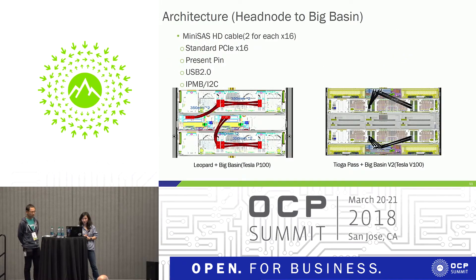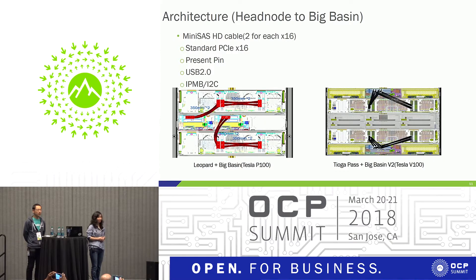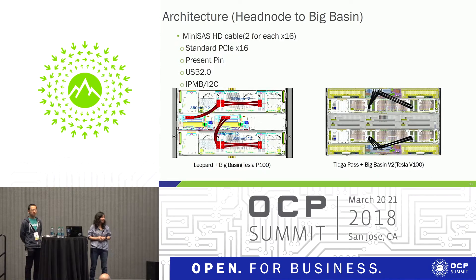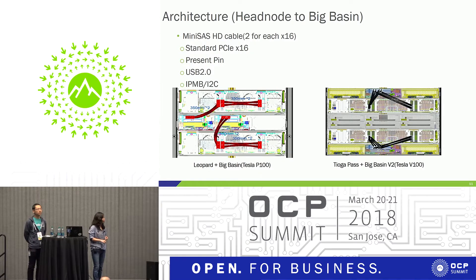Moving to architecture: for the handle to BMC connection, we use two sets of Mini-SAS HD cables to connect our handle to the Big Basin chassis. We upgraded the handle from our last generation Leopard to Tioga Pass. Tioga Pass is able to provide 2x16 PCIe Gen 3 from handle to Big Basin, which doubles the PCIe bandwidth. With Leopard the two sets of Mini-SAS HD cables were cascaded, but Tioga Pass is non-cascaded. The Mini-SAS HD cables carry the sideband signal, the standard PCIe signal, the cable detection present pin, and also USB 2.0.